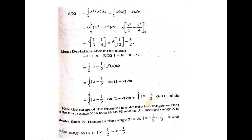The mod technique is applied to each range. In the first range, 0 to 1 by 2, x is less than 1 by 2, so mod x minus 1 by 2 becomes 1 by 2 minus x. In the second range, 1 by 2 to 1, x is greater than 1 by 2, so mod x minus 1 by 2 becomes x minus 1 by 2. We split the first range as 0 to 1 by 2 and put the second range from 1 by 2 to 1.